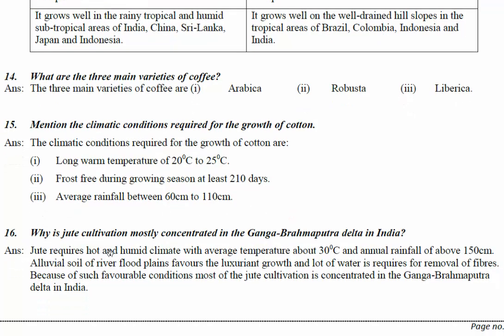Next question: why is jute cultivation mostly concentrated in the Ganga-Brahmaputra Delta in India? Jute requires a hot and humid climate with an average temperature of about 30 degrees Celsius and annual rainfall of above 150 centimeters. Alluvial soil of river flood plains favors its luxuriant growth.